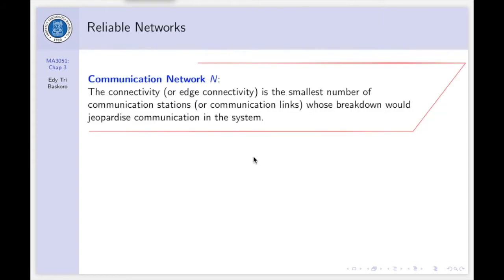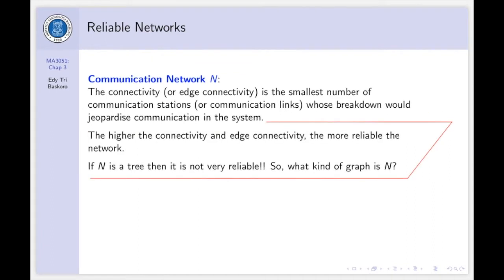We have known the concept of connectivity in a graph. Let's say we have a communication network N. The connectivity or edge connectivity is defined as the smallest number of communication stations or communication links whose breakdown would jeopardize communication in the system. The higher the connectivity and edge connectivity, the more reliable the network.